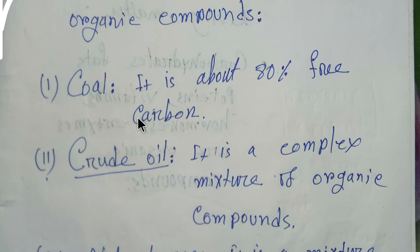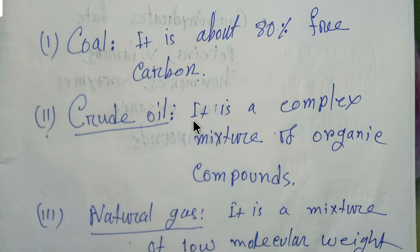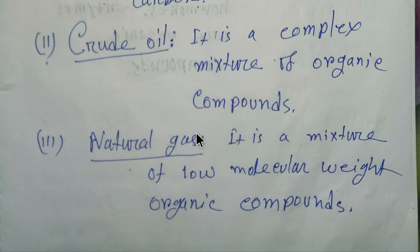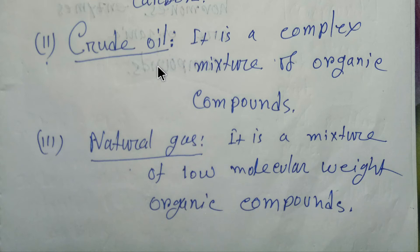Coal is about 80% free carbon. The second source is crude oil, which is a complex mixture of organic compounds. The third source is natural gas, which is a mixture of low molecular weight organic compounds. The fourth source is wood and other plant materials.